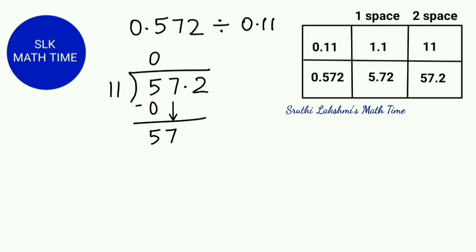Then we see 11 times what equals 57. Since 57 is not divisible by 11, we have to see which number that is divisible by 11 is close to 57. So when we do 11 times 5, we get 55. So we do 57 minus 55, which gives us 2.